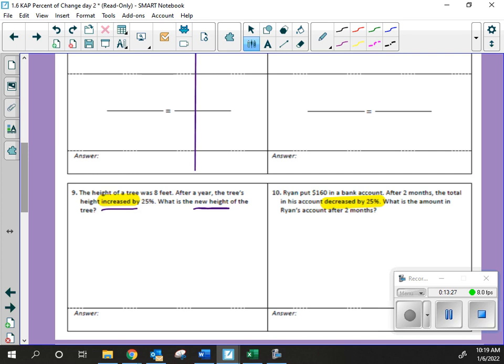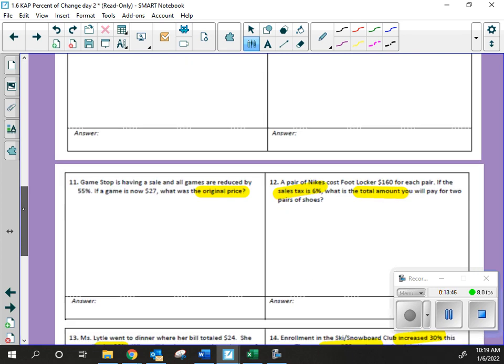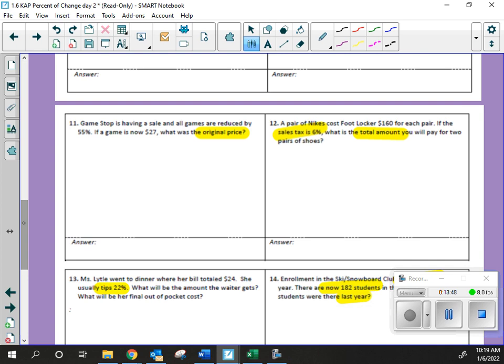But the thing is, is this talking about the change or like the new amount? When it says increase by 25%, 25 is talking about the change, but the question is asking for the new height. So, you need to make sure you're thinking about that, right? You're going to need to make sure, if you're increasing by 25, what are you going to have to do in order to find that new height? If you find the change, and you have your original, you're going to need to add the change to the original height. Very good.